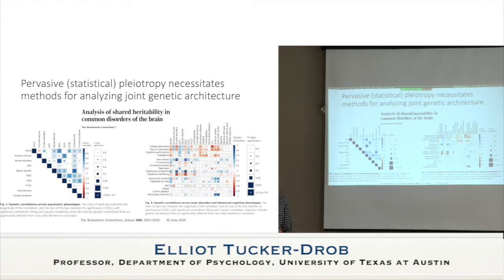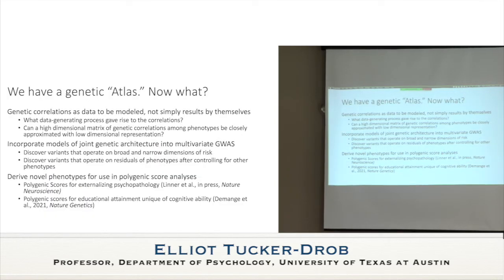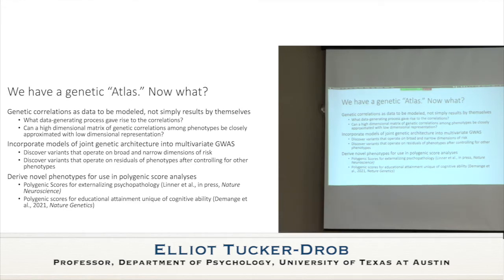Even after processing millions of GWAS variants, you're still left with a result that is itself potentially very high-dimensional. I would argue that an atlas of genetic correlations is actually a starting point — or at least a waypoint — that needs further analysis. One thing we can do is treat the correlations as data to be modeled, not simply as results in and of themselves.